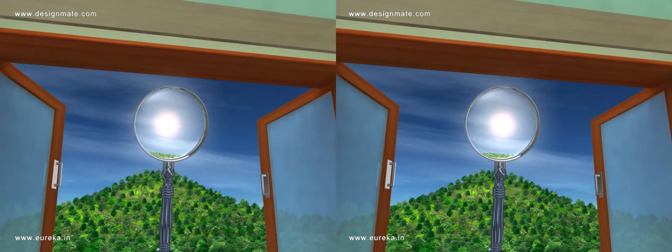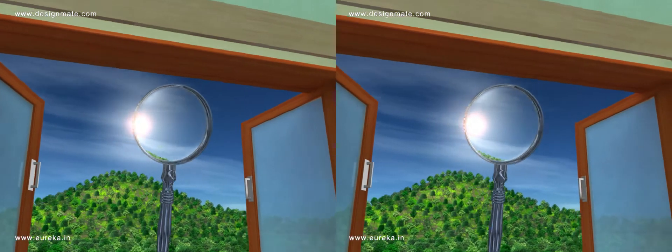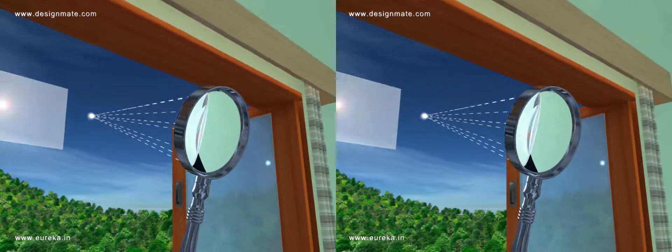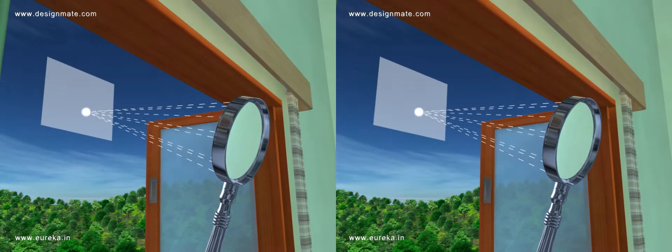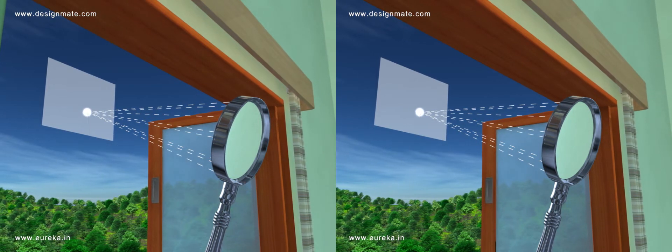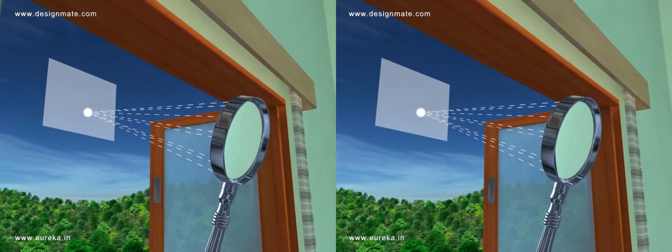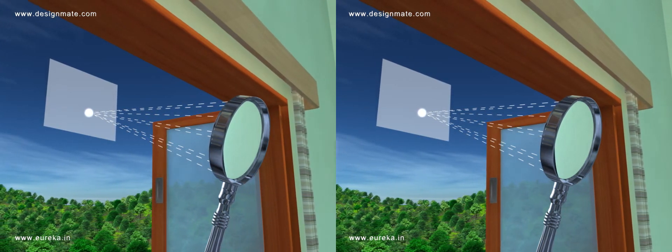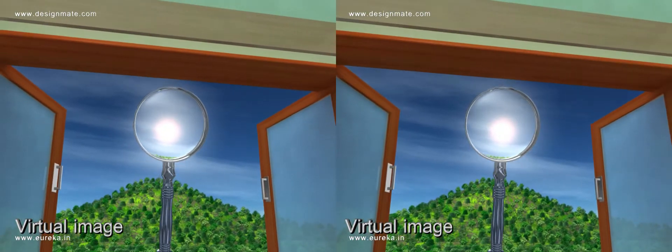The Sun viewed through a concave lens would appear as a point. However, if you place a paper at this point it would not be heated. The image formed in this case is a virtual image.